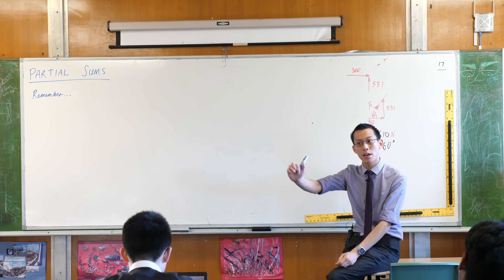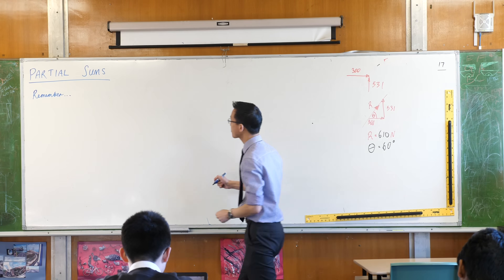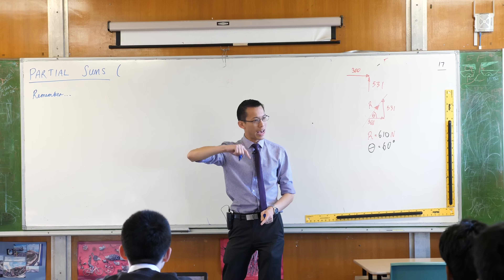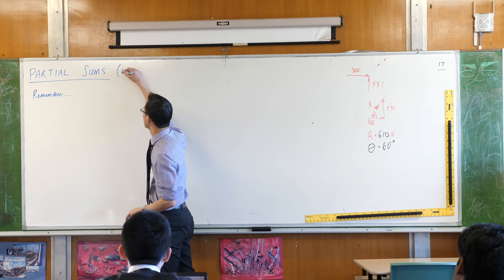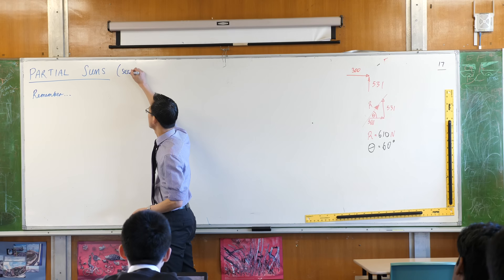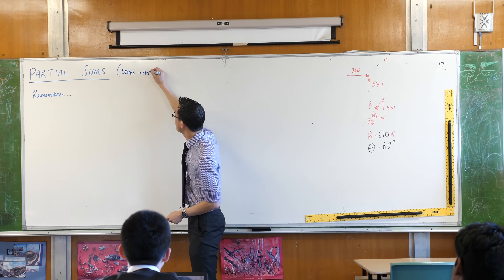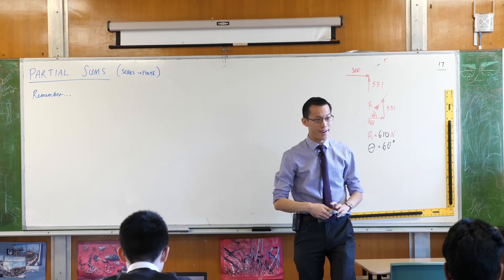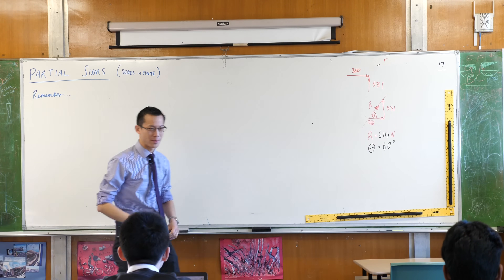We're moving from the idea of a sequence - a bunch of things in order - to a series. A partial sum is what happens when you add up the terms in a sequence, so it's another name for a series that's finite. We'll come to series that aren't finite - series that are infinite - a little bit later on, but one step at a time.